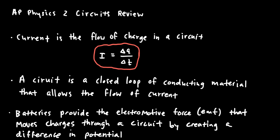This video is a review of circuits for AP Physics 2. First, a few generic things about circuits: current is the rate of flow of charge in a circuit, expressed as ΔQ/ΔT. There are certain things that determine that rate of flow of charge, like the different types of elements in a circuit, but nonetheless current is the flowing of charges in a circuit.